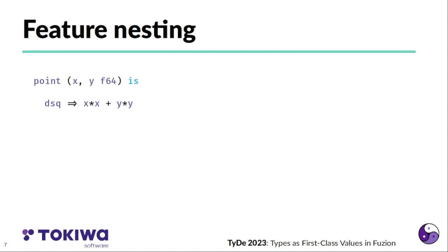Features can be nested, so we can move the d squared into the feature point, so it becomes an inner feature of point and has access to the fields x and y in that point. Fuzion has immutable fields, so instead of declaring a function, we can also make d squared a field, which semantically has no effect as long as no side effects occur. The only difference is that it forces the calculation of the value at the point in time where the point is created, while the previous function version calculates the value at the point that d squared is called.